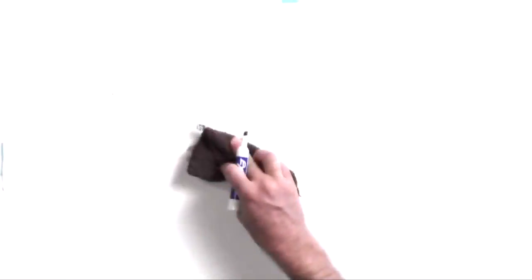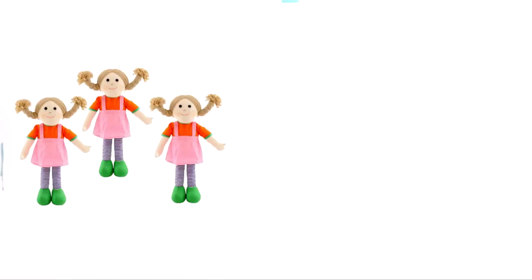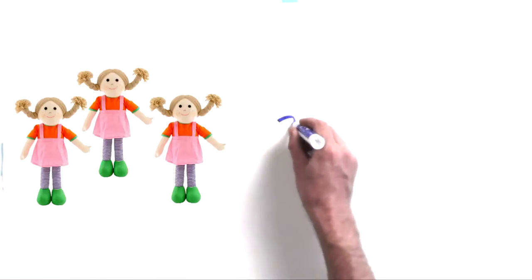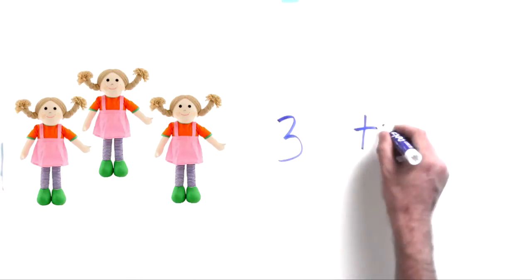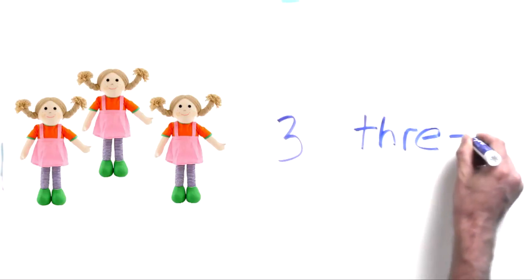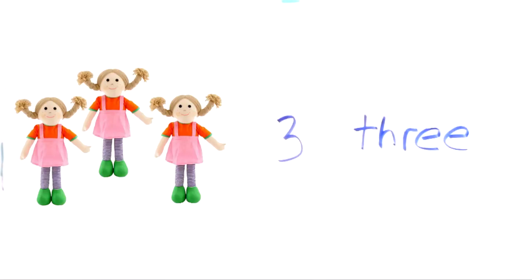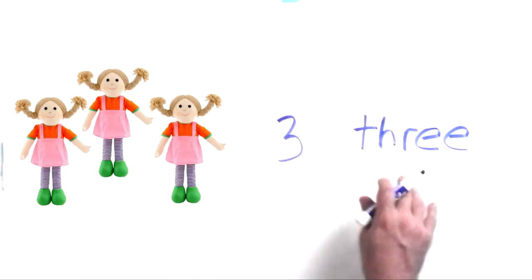Let's go on to the number three. Let's say we count dolls. We have three dolls on the screen. Let's count them: one, two, three. We have three dolls. Now let's write the word three — T-H-R-E-E. That's how we write the word three. So practice writing that a few times. Write the number three and the word three and be able to count: one, two, three.